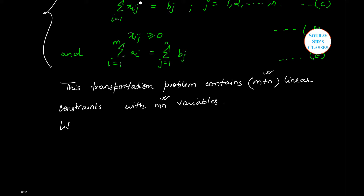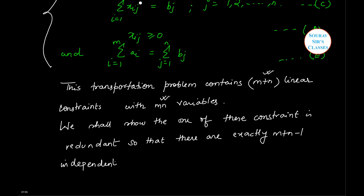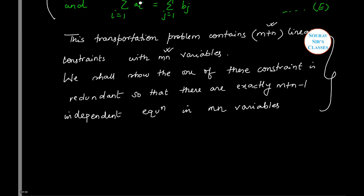We can prove that one of these constraints is redundant — that is, unnecessary. This means we will be left with exactly m plus n minus 1 independent equations in m times n variables. This is our purpose — this is what we need to prove in this particular case.